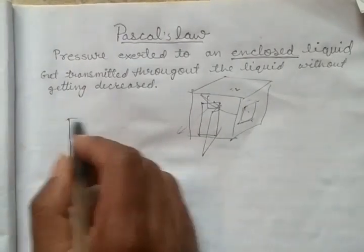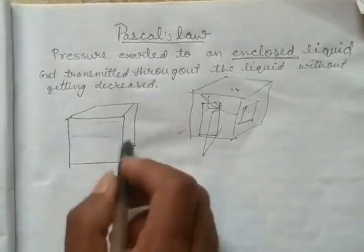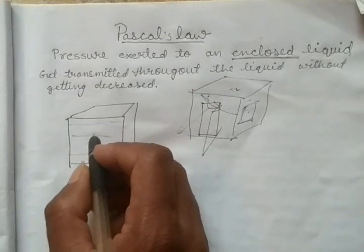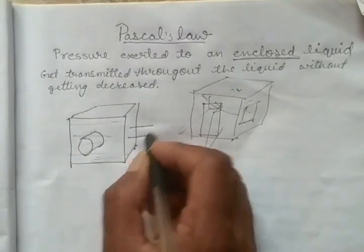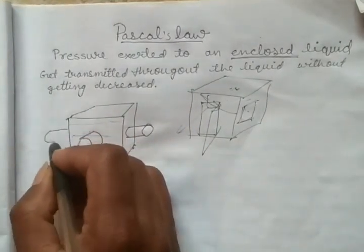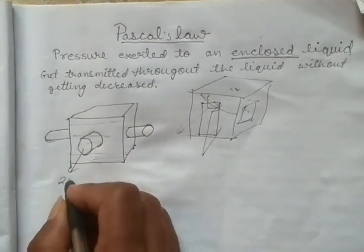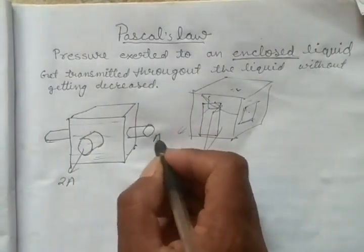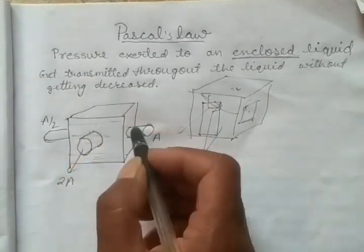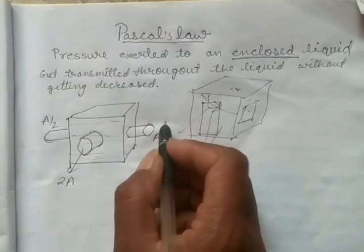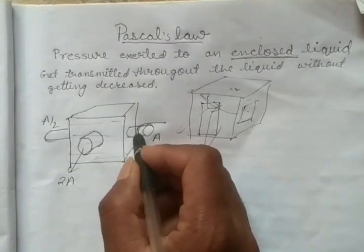Let us suppose you have a water tank like this filled with water - enclosed liquid - and here you have an opening, another opening, another opening of different area of cross section. This area is twice of A, this area is A, and this area is A by 2.